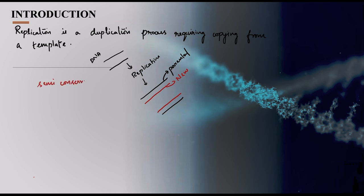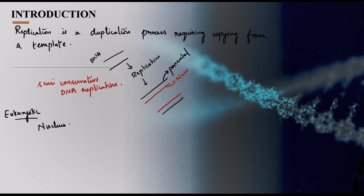In eukaryotic organisms, replication takes place in the nucleus during the S phase of the cell cycle. In the cell cycle there are two main phases: interphase and M phase. Interphase has three sub-phases: G1, S, and G2. Replication happens during S phase in eukaryotic cells.